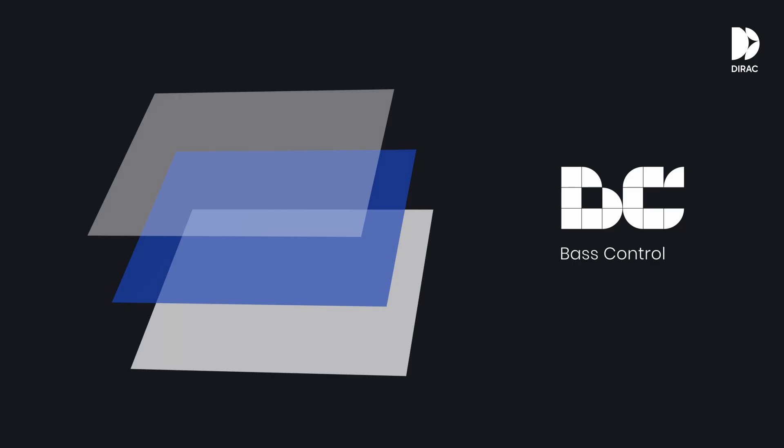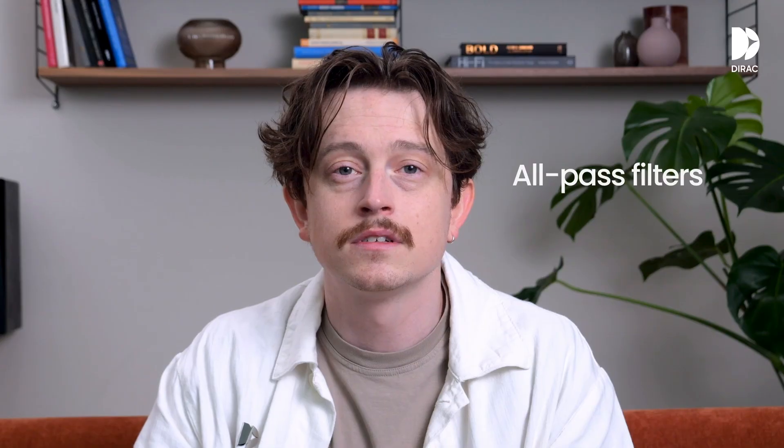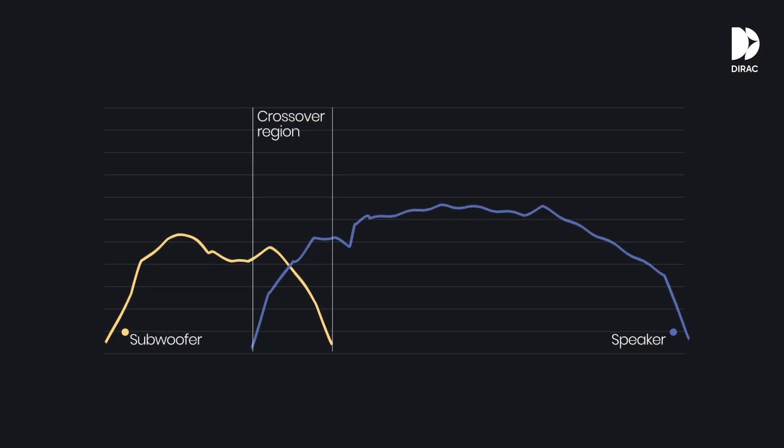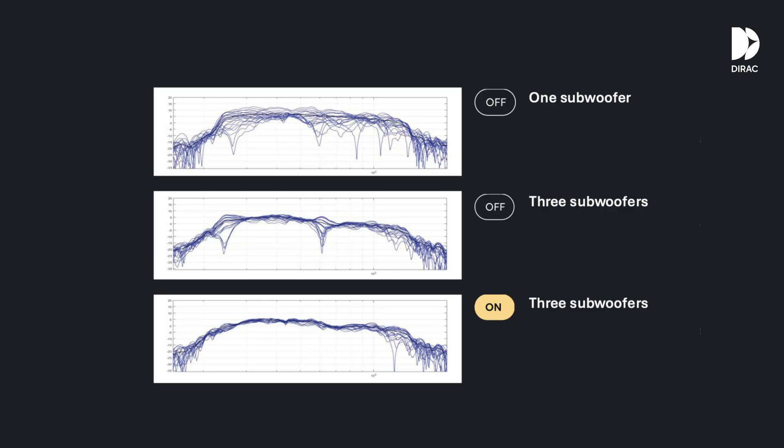If you've ever had bass that felt uneven or boomy in one seat and weak in another, you'll love this. Getting the best seat-to-seat bass coverage has typically been a dark art, but by using a complex system of all-pass filters, bass control makes sure your subs work together in harmony with the system. Bass control works up to 150Hz, above which regular Dirac room correction is applied. It looks at how your subwoofers perform in the room and co-optimizes them to counter the effects of room modes — a root cause of uneven bass — and ensures the subwoofers seamlessly hand off to your main speakers at the crossover point.